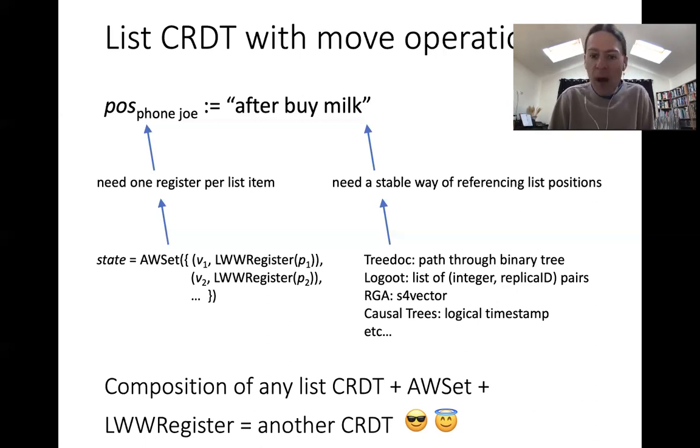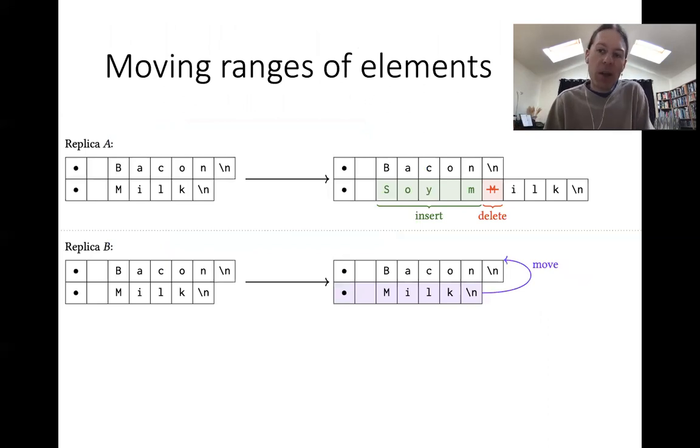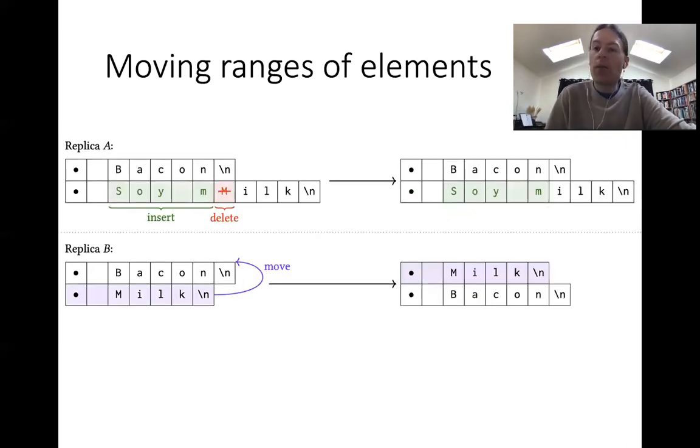So are we finished? I'm going to make it a step harder for us still. So far we've considered only moving a single list element at a time. What if we want to move not just a single list element but a whole range of list elements in one go? This might happen in text editing, for example. Let's say we have a text document containing a list of bullet points—firstly bacon, secondly milk. Replica B wants to take the milk item and move it in front of bacon, while concurrently replica A edits the text of the milk item and changes it to soy milk by deleting the uppercase M and inserting the words 'soy' and then the lowercase M.